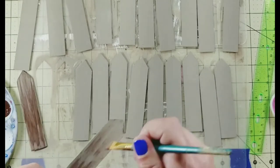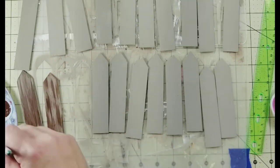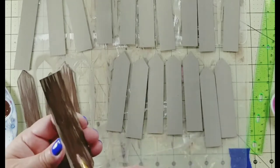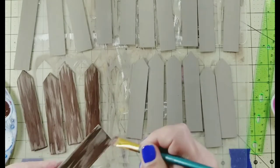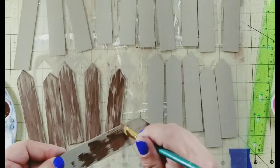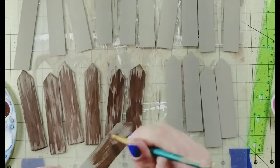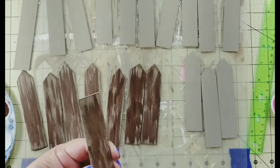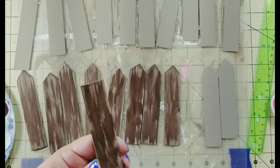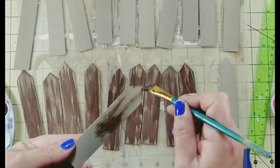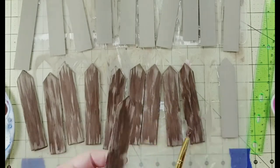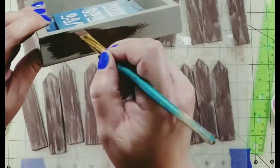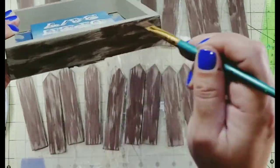I'm going to dry brush all of the craft sticks that we cut including the longer rectangle pieces. Now you can do this technique to both sides. I chose to just do one side and that will be the side that faces out.